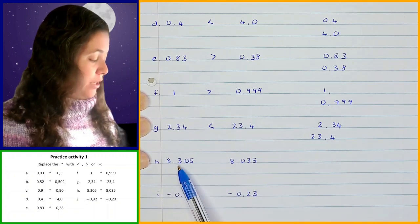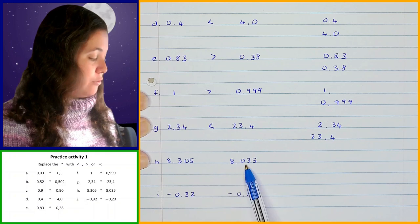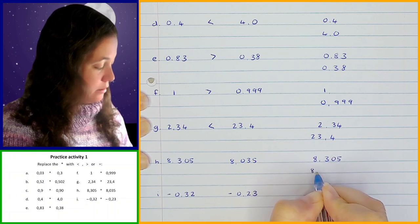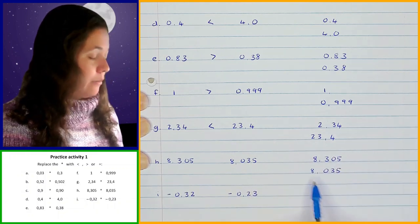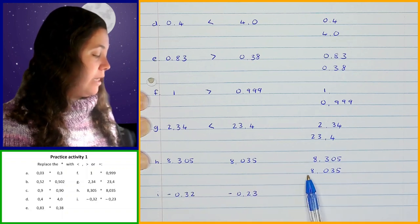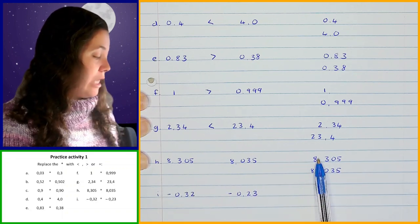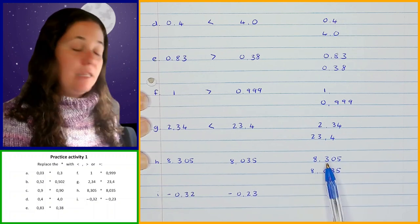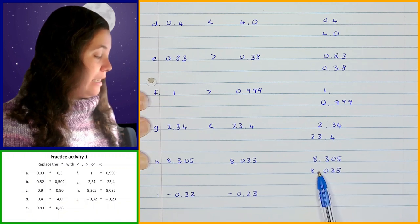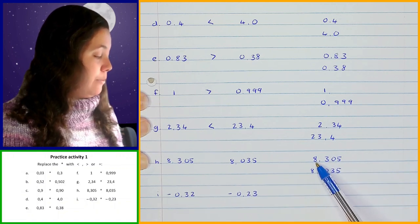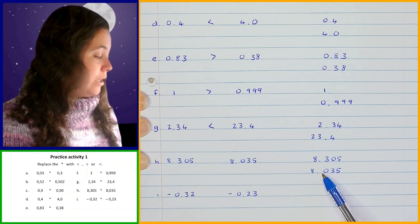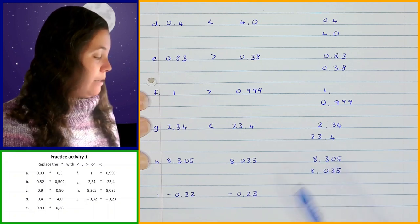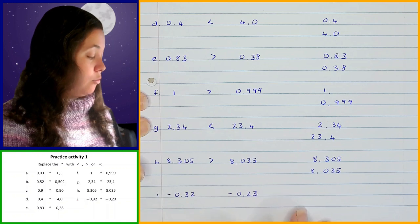Then the next one I've got 8.305 and 8.035. When I write those underneath each other and compare them, working from left to right, in the ones position I've got 8s — they are the same so far. Then I get to the tenths position: this one has got a 3 and this one's got a 0. So in the tenths position I can say already that 8.305 is greater than 8.035, because this has got 3 tenths and this has got no tenths.